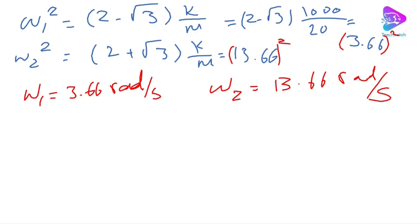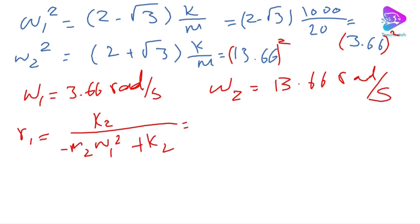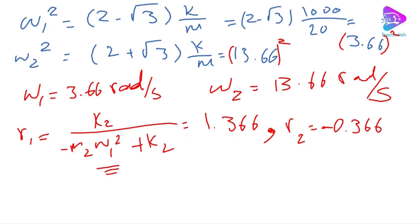With omega1 and omega2 known, we calculate r1 = k2/(minus m2*omega1-squared + k2) = 1.366 (dimensionless), and r2 using omega2 gives minus 0.366. One is positive and the other is negative: in the first mode the two masses move in the same direction, while in the second mode they move in the opposite direction due to the negative sign.